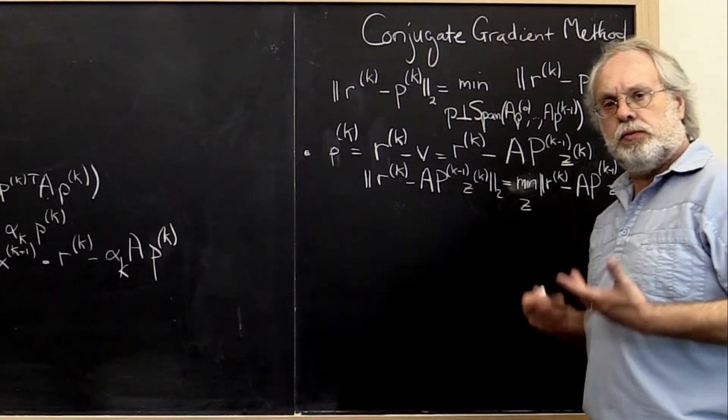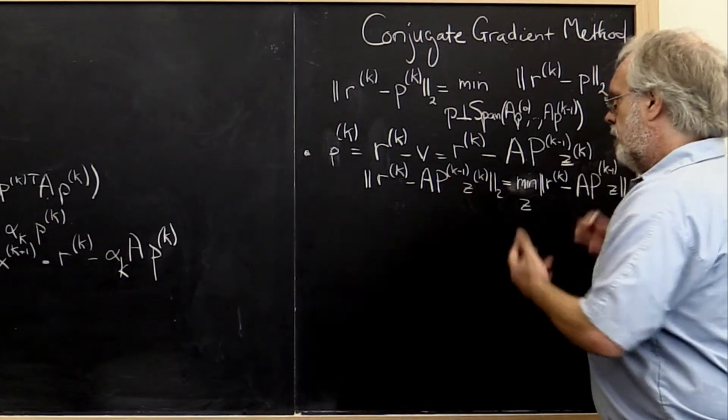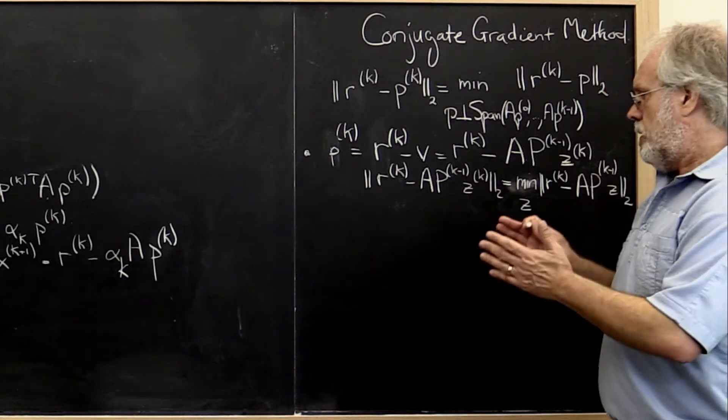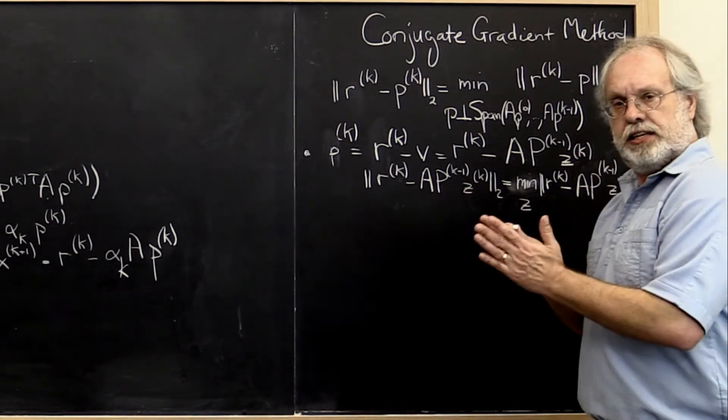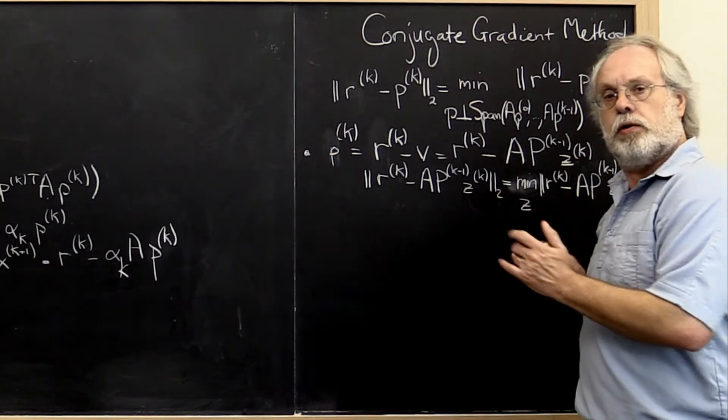And notice what that means is that we need to do a linear least squares problem. We need to solve a linear least squares problem with a matrix that, as time goes on, ends up with more and more columns.